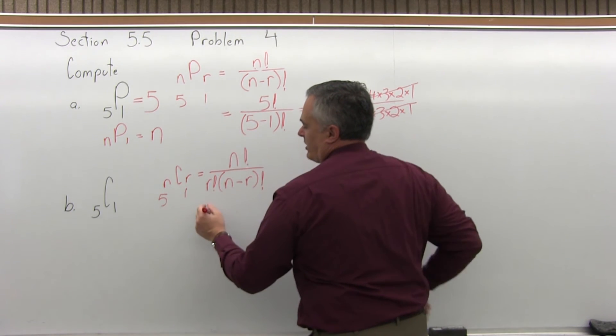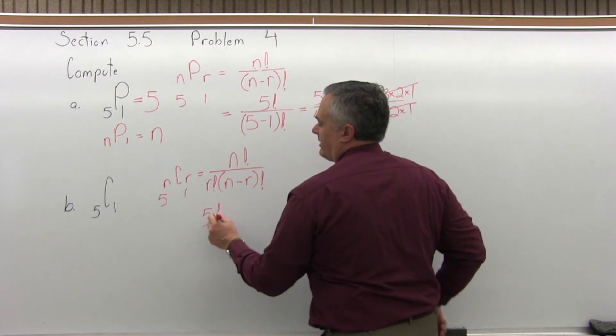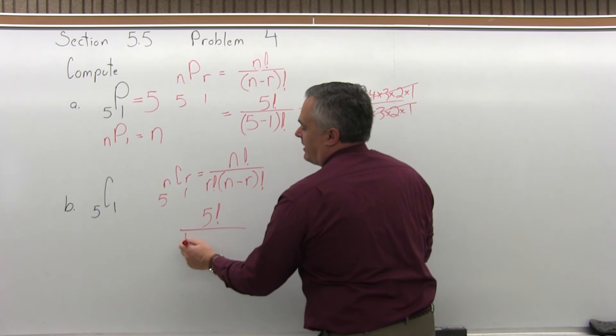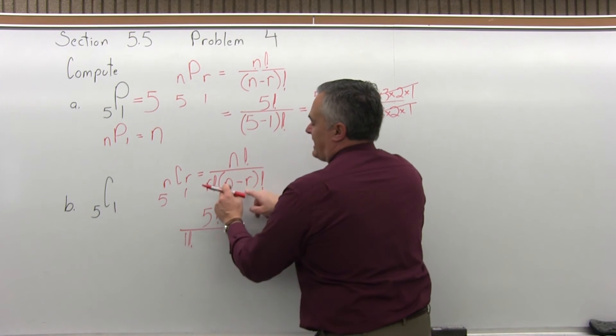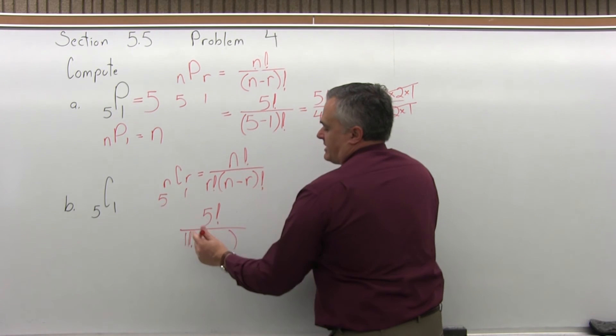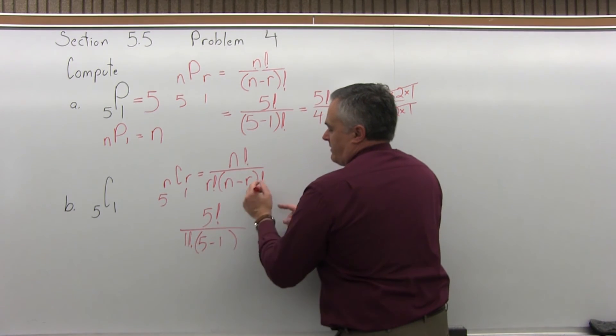So fill that in. So on top, n factorial will be 5 factorial. In front of the parentheses, r factorial will be 1 factorial. Inside the parentheses, n minus r will be 5 minus 1 with a factorial.